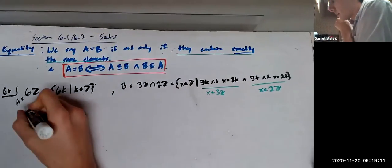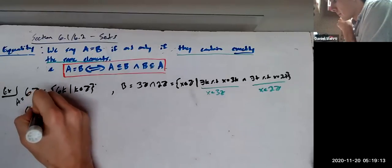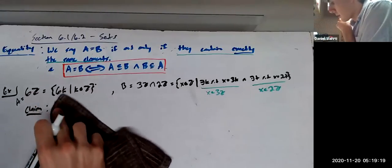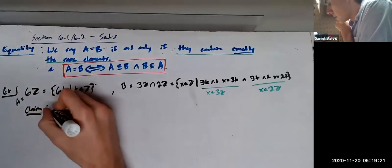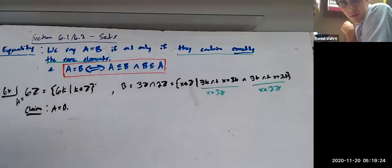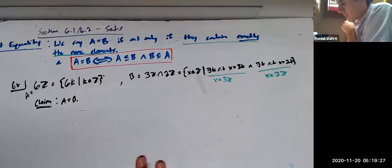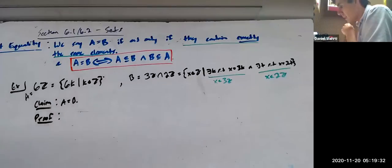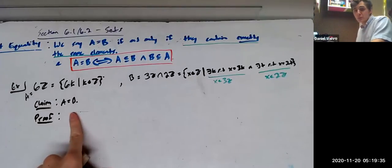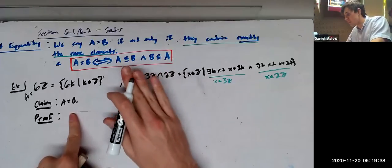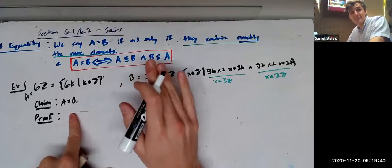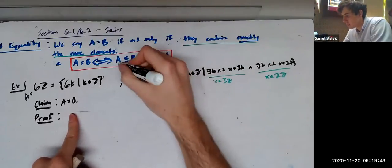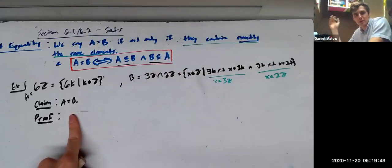Here's my claim. 6Z, or I'll say A, is equal to B. And here's how we prove it.